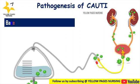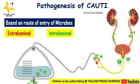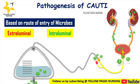Pathogenesis of CAUTI: based on the route of entry of microbes, it is classified as extraluminal and intraluminal. Microbes may ascend into the urinary tract through the external or internal surface of the catheter. Microorganisms colonize the external catheter surface, most often creating a biofilm. Bacteria tend to ascend early after catheter insertion due to lack of asepsis, or one to three days after catheterization usually due to capillary action.